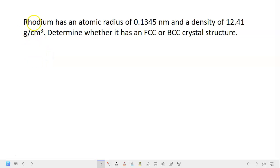Hi everyone. I have one question here that I would like to discuss, to show how to solve this problem. The question is: rhodium has an atomic radius of 0.1345 nanometer and a density of 12.41 gram per cm³. Determine whether this rhodium has either FCC or BCC crystal structure.